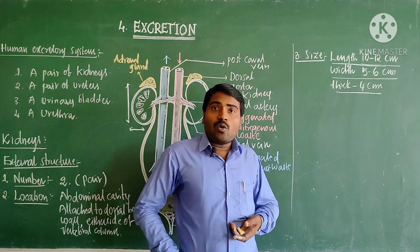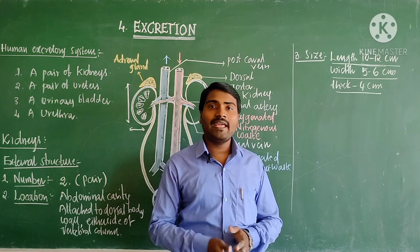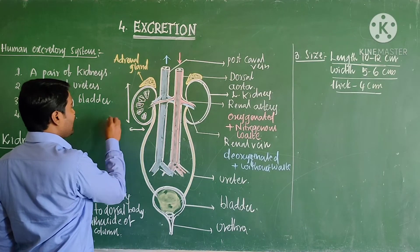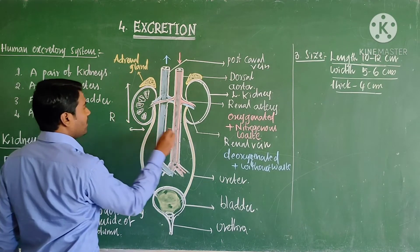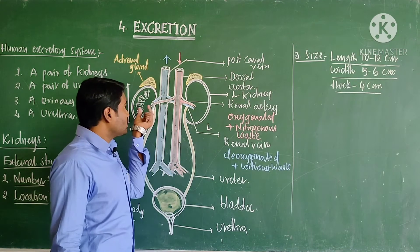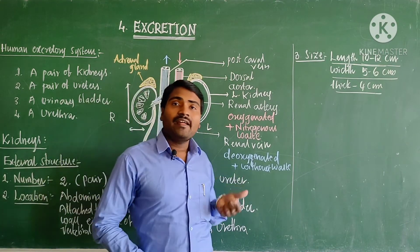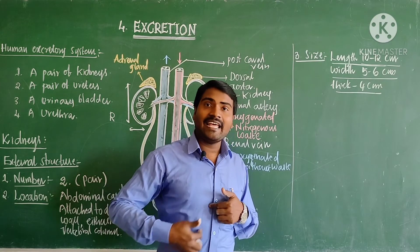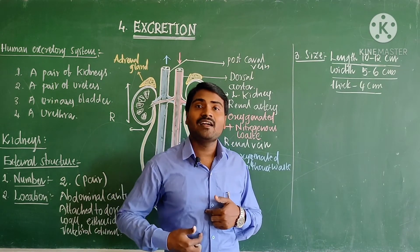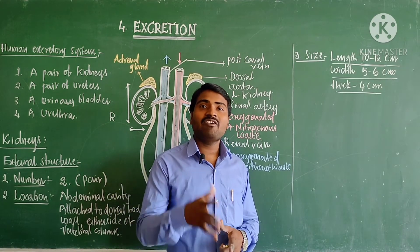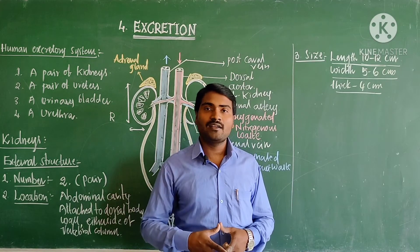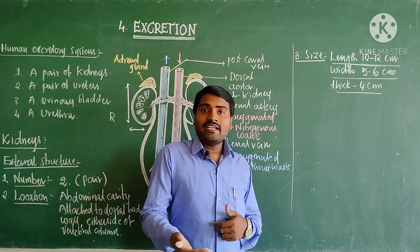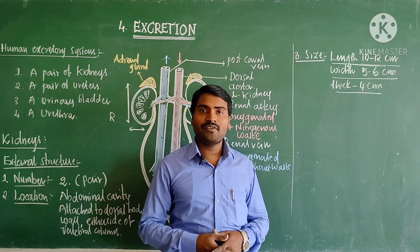One more point about location: the right kidney is slightly lower than the left one. This is because in the upper right area the liver is present — the liver is the largest gland — and because of the liver the right kidney is pushed slightly lower than the left one.